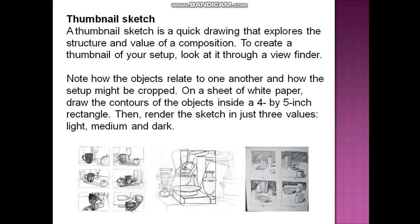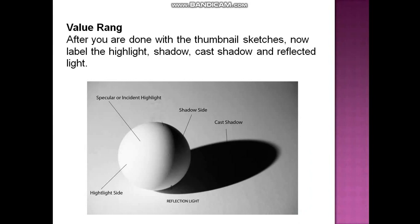Thumbnail sketch. A thumbnail sketch is a quick drawing that explores the structure and value of a composition. To create a thumbnail of your setup, look at it through a viewfinder, note how the objects relate to one another, and consider how the setup might be cropped. On a sheet of white paper, draw the contours of the objects inside a four-by-five inch rectangle, then render the sketch in just three values: light, medium, and dark. After completing the thumbnail, label the highlight, shadow, cast shadow, and reflected light.